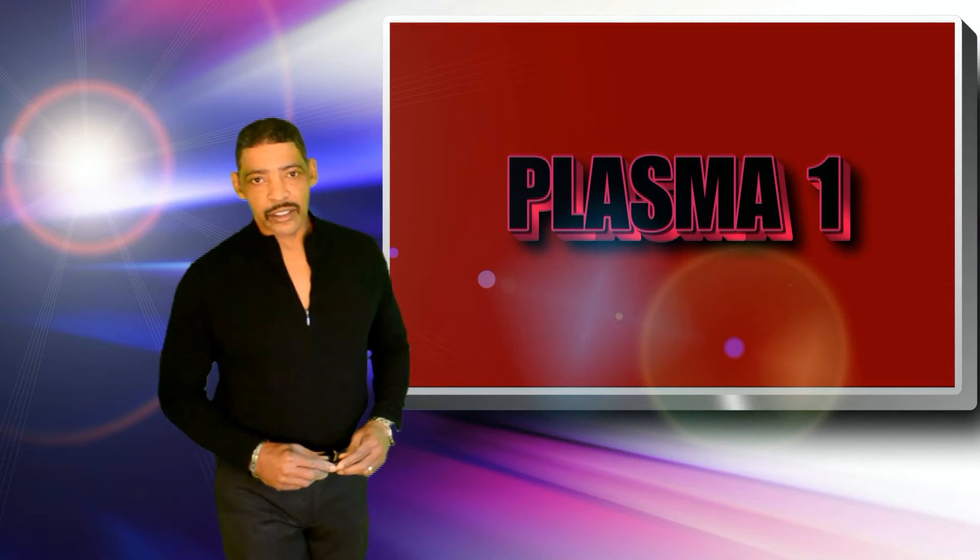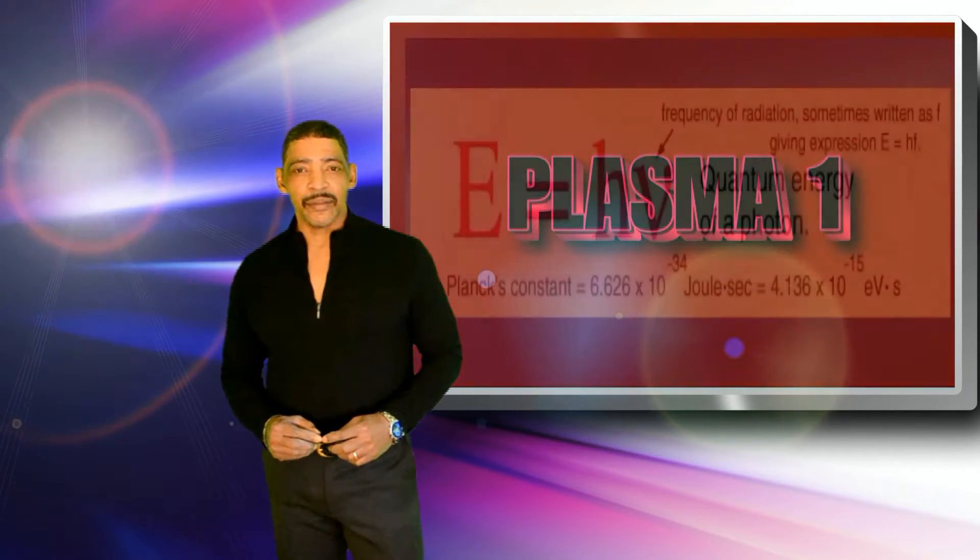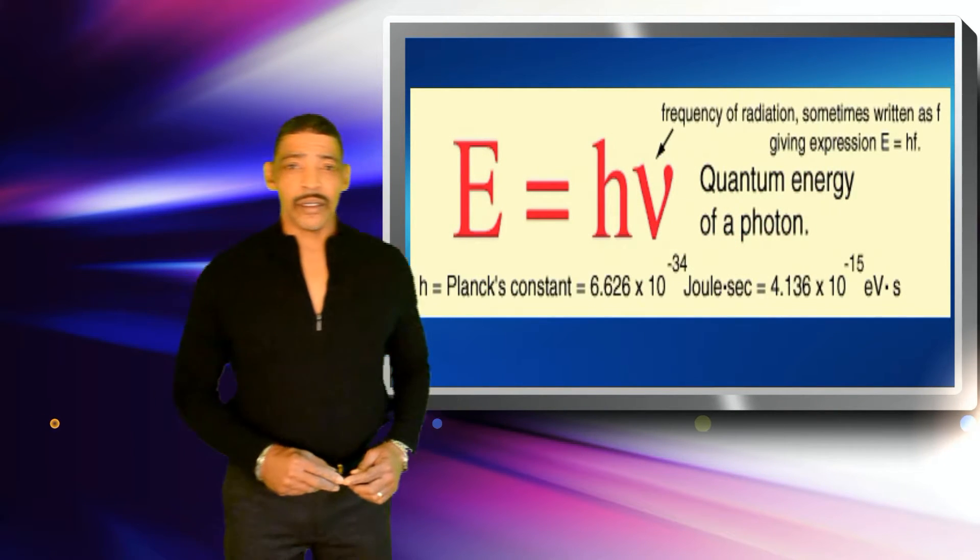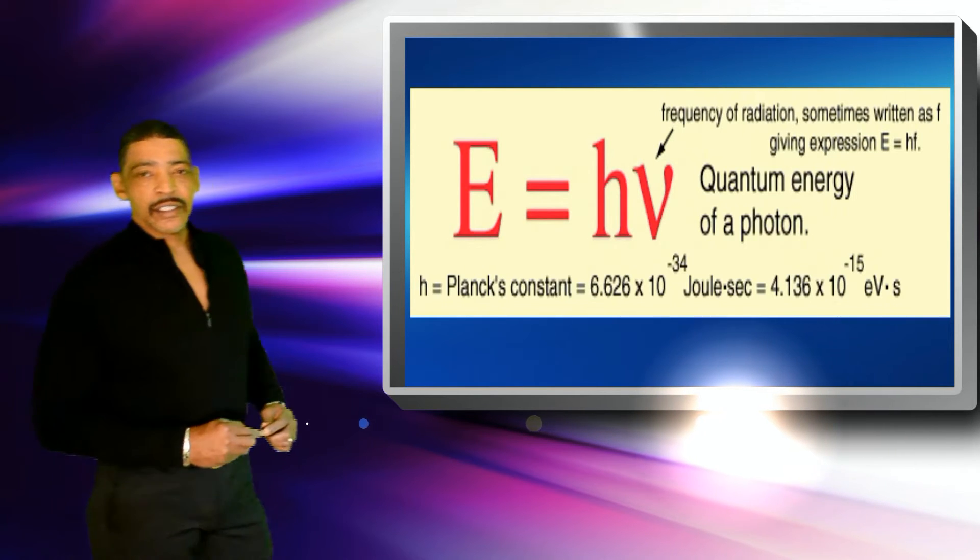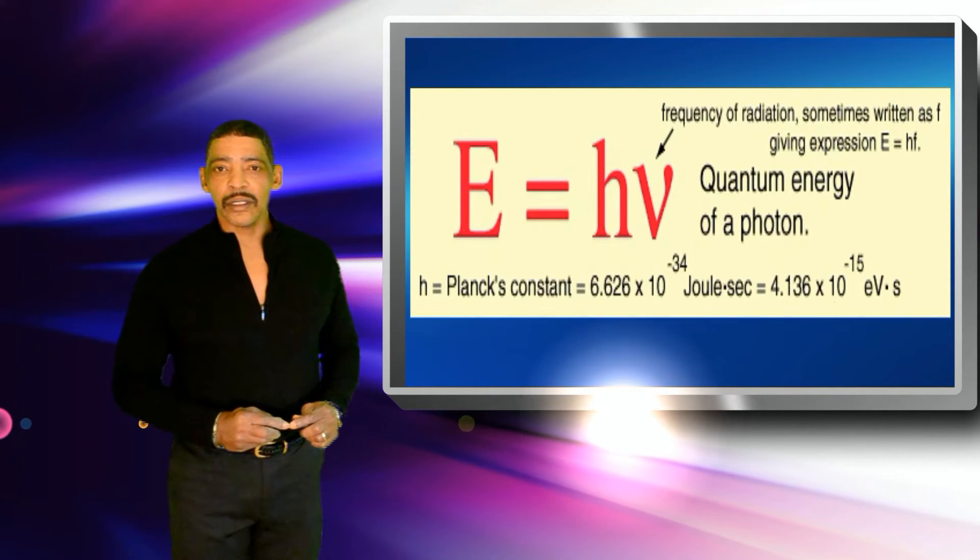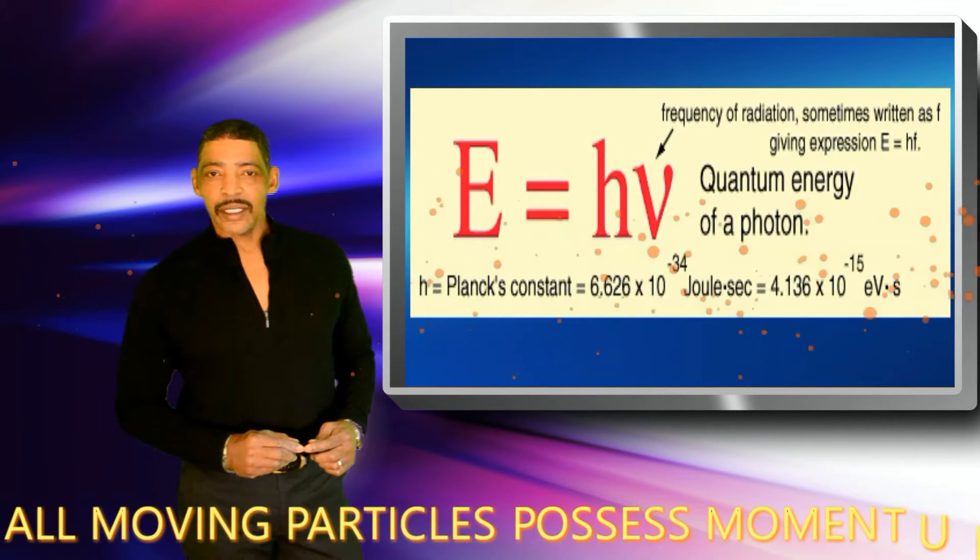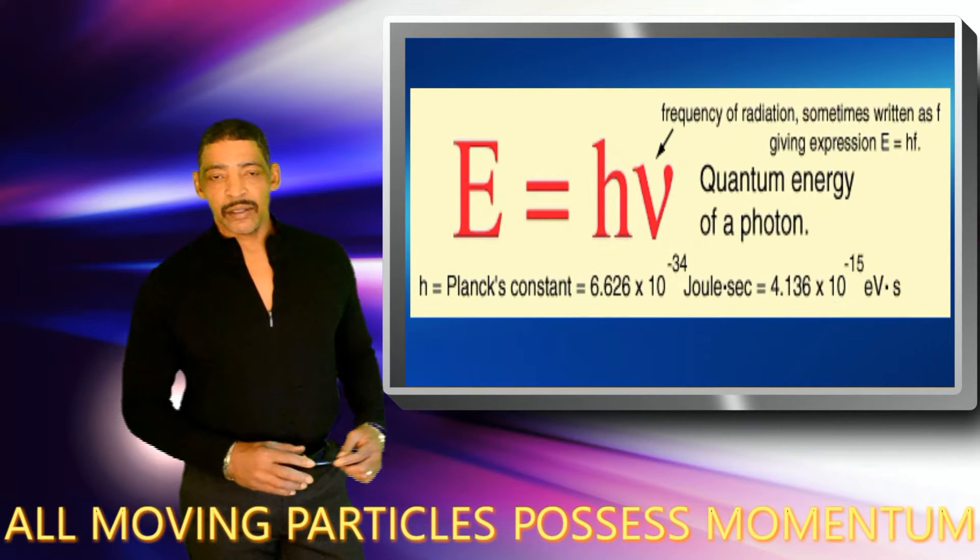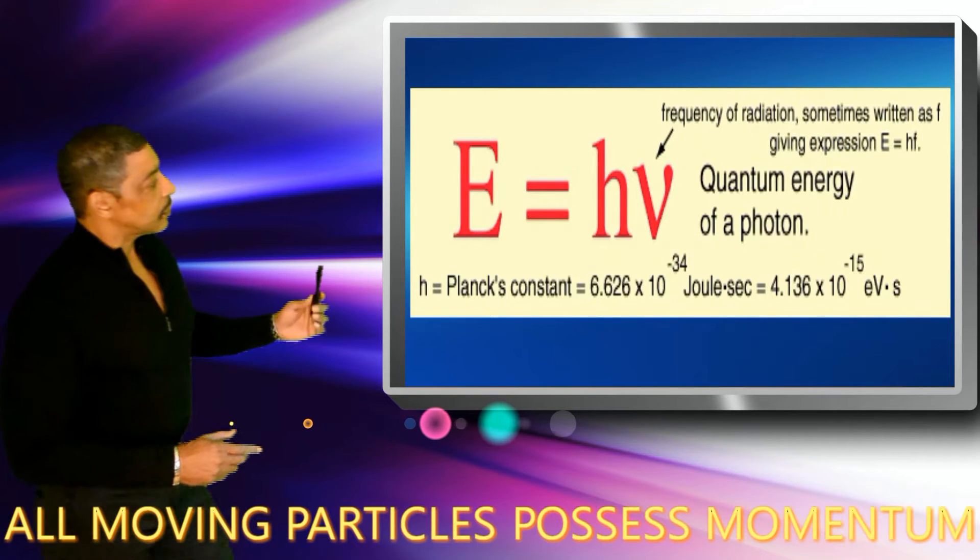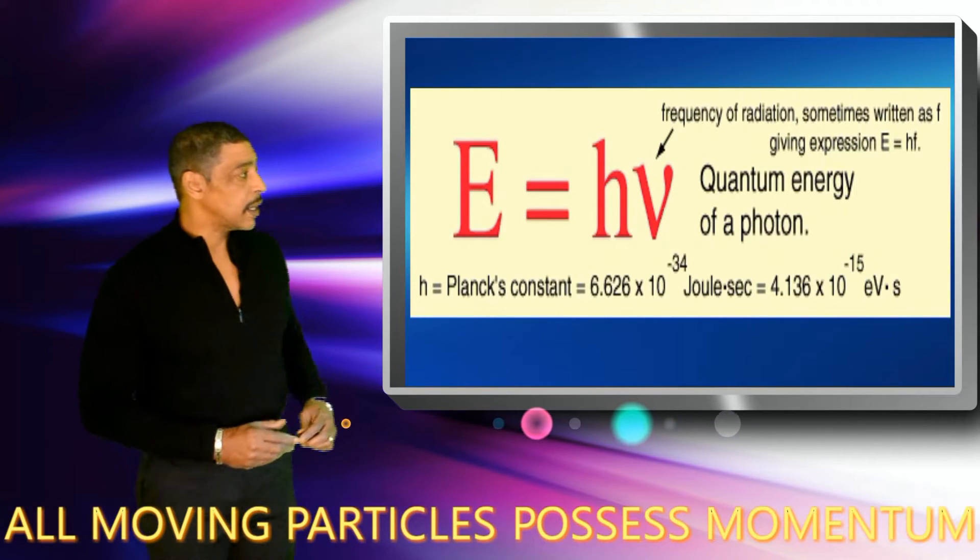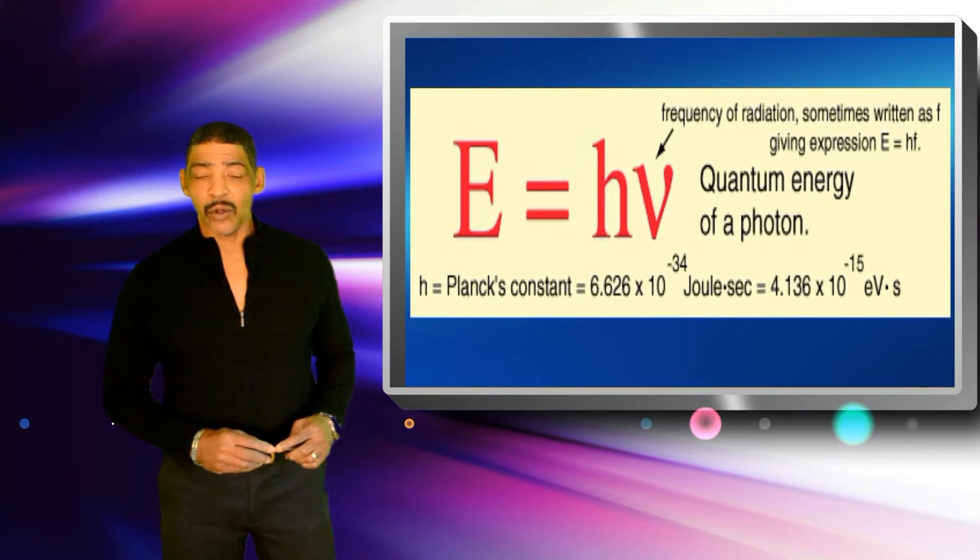Planck developed an equation that relates the energy of a quantum to a constant times frequency. The constant is called Planck's constant and has a value of 6.63 times 10 to the negative 34 joules times seconds. The units for Planck's constant are related to the momentum of the quantum as it travels in a wave. Since the frequency is related to the speed of light, where frequency is equal to the speed of light c divided by the wavelength lambda.